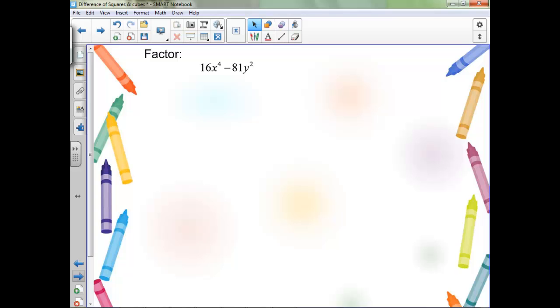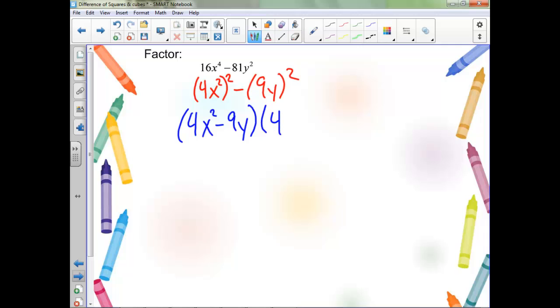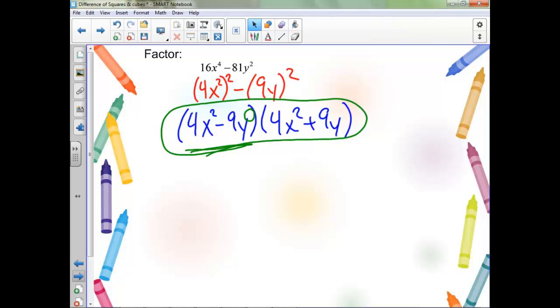Now factoring this one. Once again, notice this is 4x squared squared minus 9y squared. So once again, it's a difference of squares. We'll have our 4x squared minus 9y, and then our 4x squared plus 9y. Now notice, this is not a y squared, so this isn't a difference of squares anymore over here. So we can't factor anymore, so we are done.